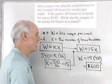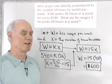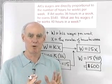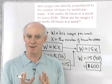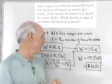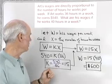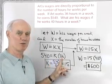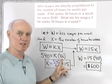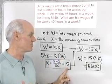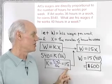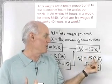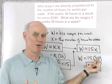So if you're paid an hourly rate, your weekly wages are going to be directly proportional to the number of hours you work each week. If you make $540 for working 36 hours, that means you're making $15 per hour. So at that same rate, working 40 hours per week, you'll make $600 for that week.